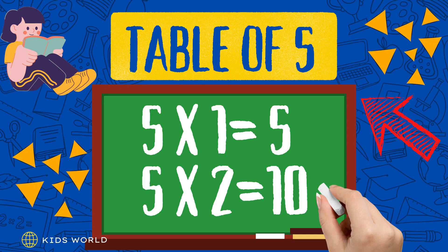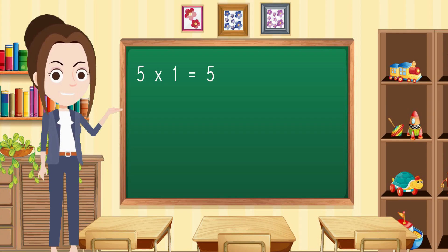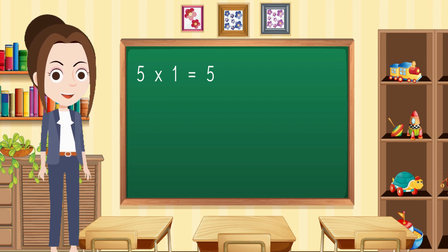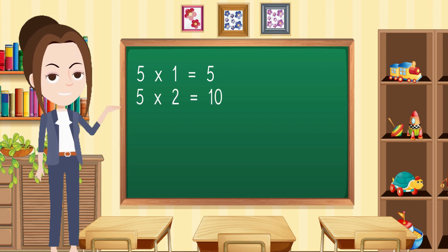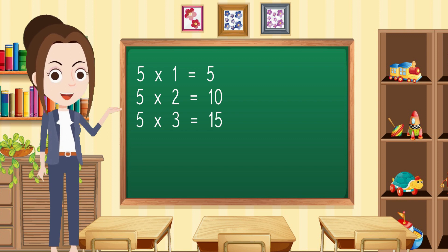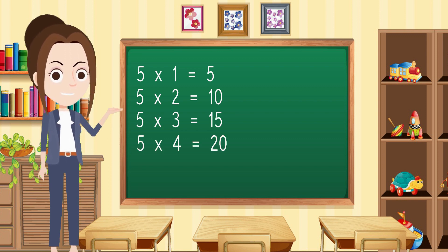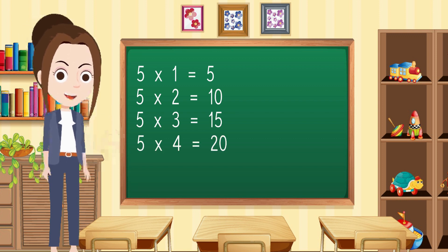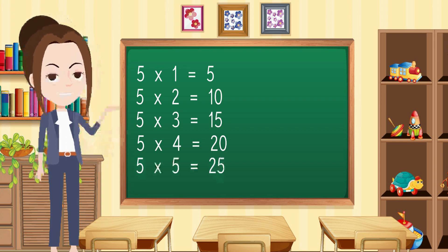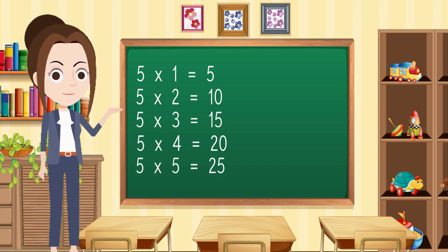Table of 5. 5 1s are 5, 5 2s are 10, 5 3s are 15, 5 4s are 20, 5 5s are 25,